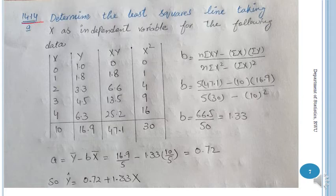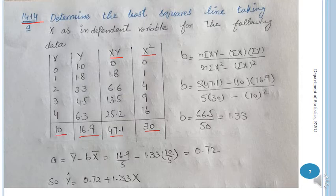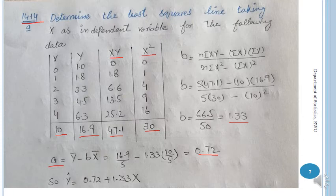Next is question 14.14: determine the least square line taking x as the independent variable for the following data. You have x and y variables given. You need columns for x, y, and x². After totalling the columns and substituting into the formulas, b = 1.333. Using a = ȳ − b·x̄, a = 0.72. Substituting a and b, the estimated line is ŷ = 0.72 + 1.33x.